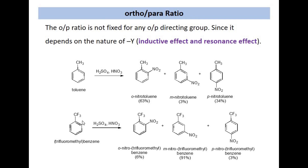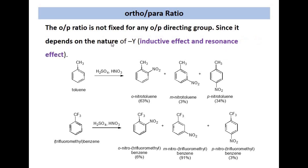The activating and deactivating nature of a group is related to two phenomena: the inductive effect and the resonance effect. These two effects make the benzene ring either more reactive or less reactive than benzene itself. For toluene, both the inductive effect and the resonance effect are electron donating, and these two electron-donating effects cause benzene to react with the nitrating mixture very rapidly. Ortho-nitrotoluene is formed in 63% yield and para-nitrotoluene is formed in 34%.